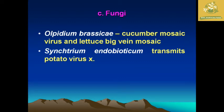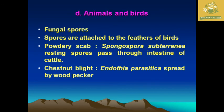Fungi as animate agents include Olpidium and Spongospora, which transmit curcuma mosaic virus, lettuce big vein virus, and Synchytrium endobioticum, which transmits potato virus from one plant to another. The fourth animate agent category is animals and boars — fungal spores attach to feathers of birds and are deposited from one field to another. For example, in potato scab, resting spores pass through intestines of cattle, and Endothia parasitica, causing chestnut blight, is spread by woodpeckers.